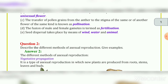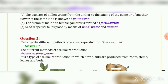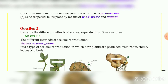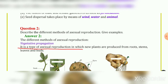Question 2: Describe the different methods of asexual reproduction and give examples. The first method is vegetative propagation. It is a type of asexual reproduction in which new plants are produced from roots, stems, leaves, and buds.